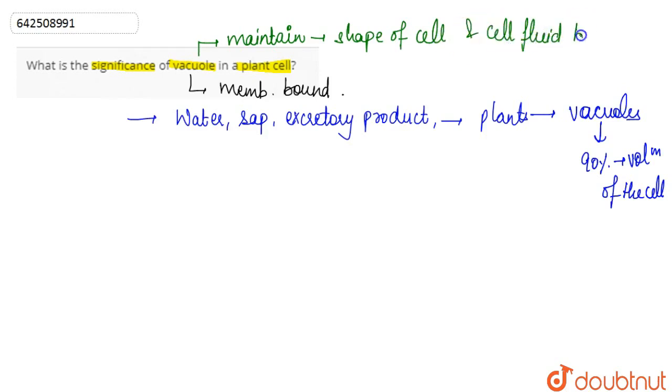They maintain the shape by maintaining the turgor pressure against the cell wall. This is the significance of vacuole in the plant cell.